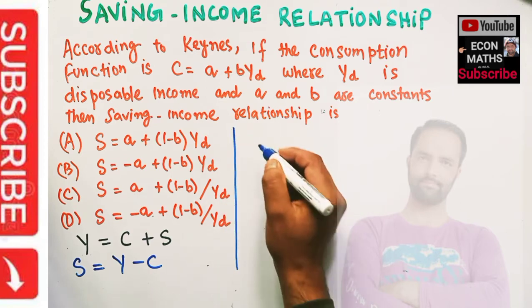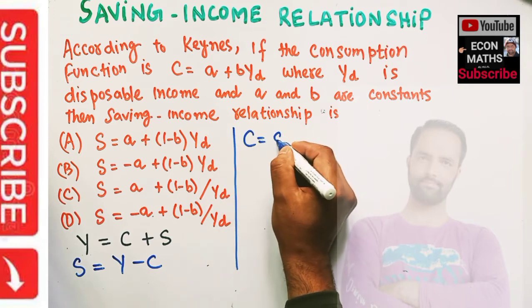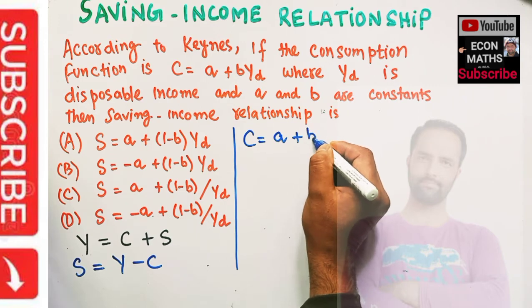Simple thing. And we are being given C = A + B*Y_D.